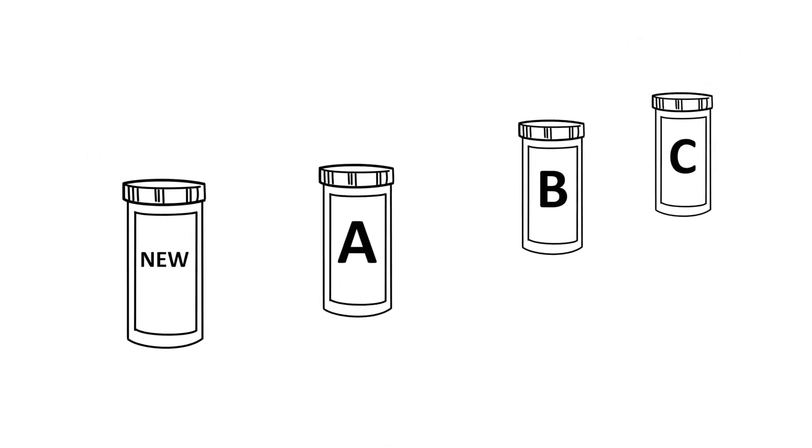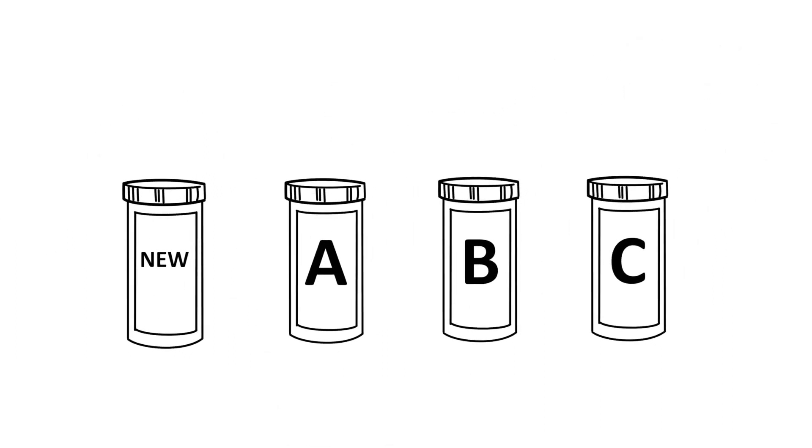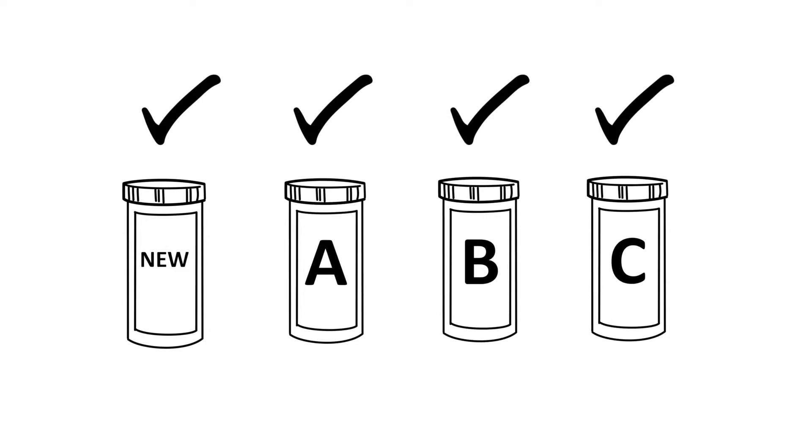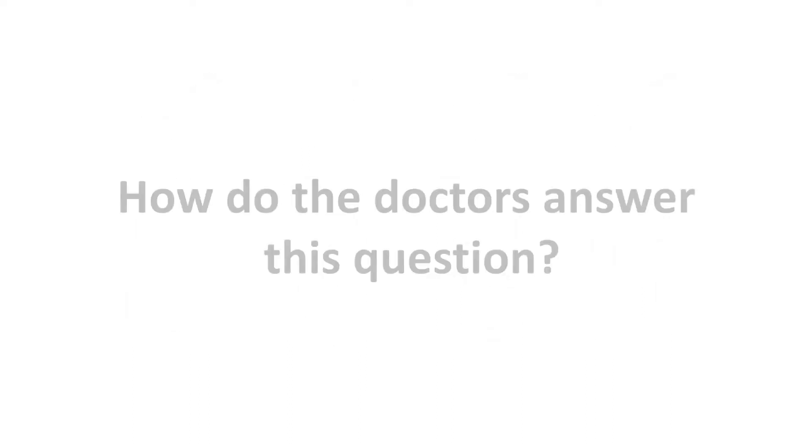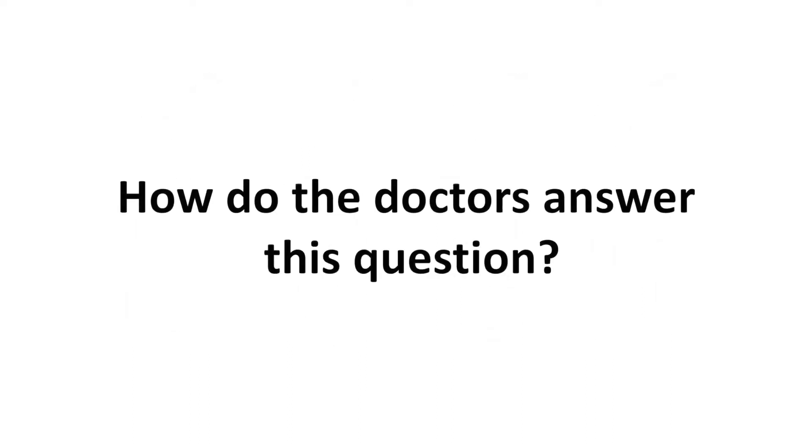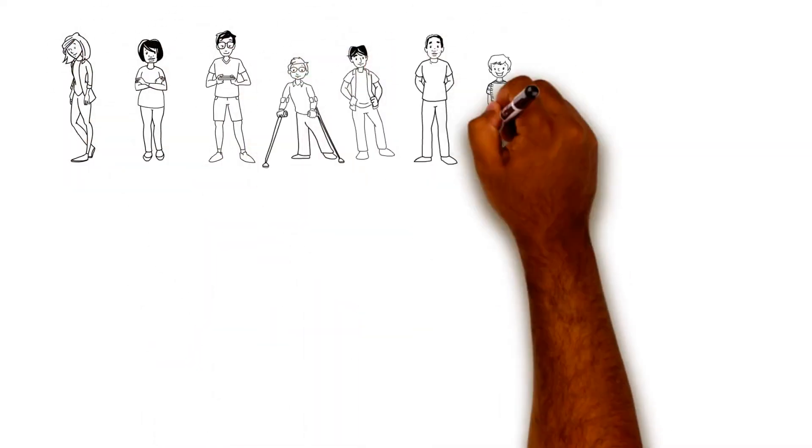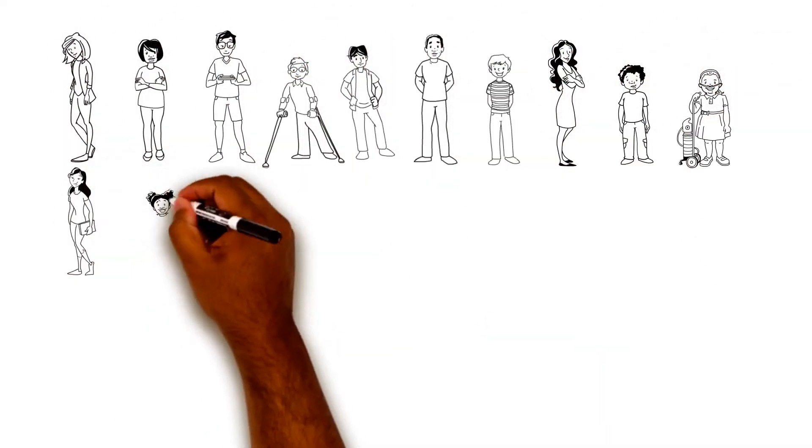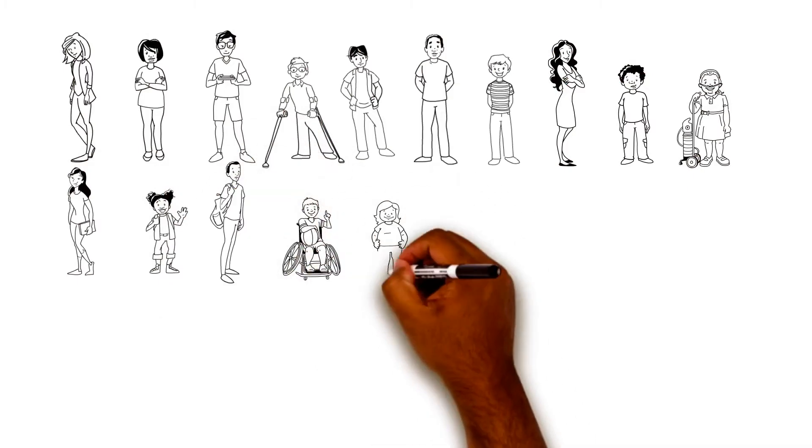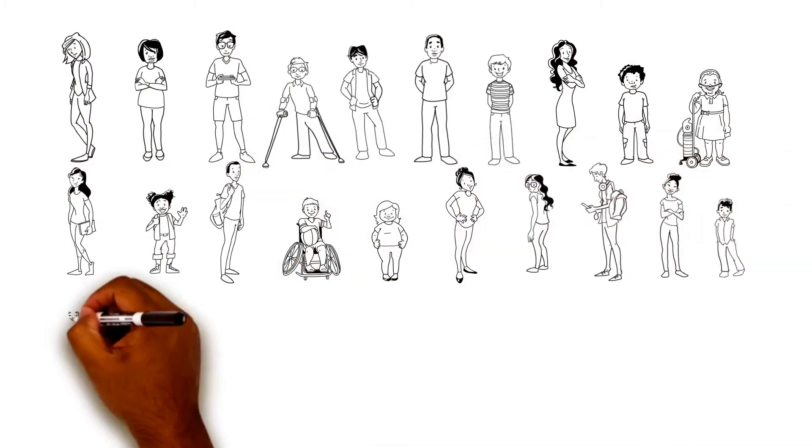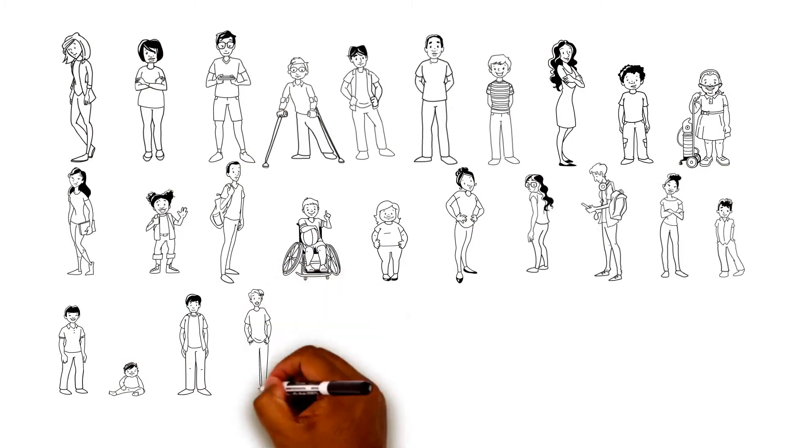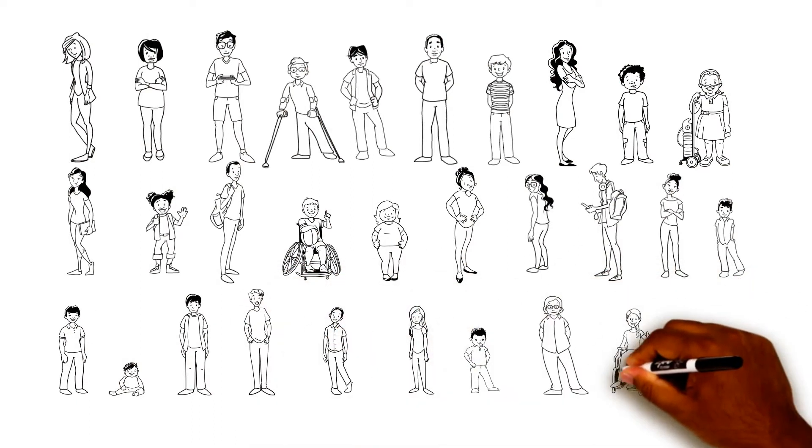The doctors want to find out if the new medicine is better or worse or the same as current medicines. How do the doctors answer this question? What they need to do is take a group of VIPs and give the new medicine to some VIPs and give the other medicines to the rest. But which VIP gets which?